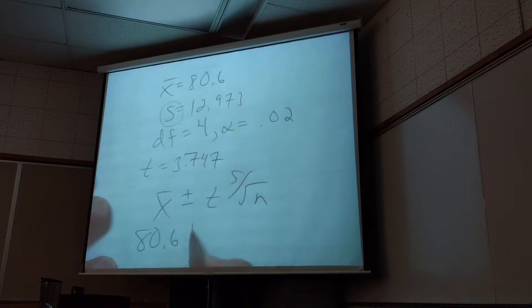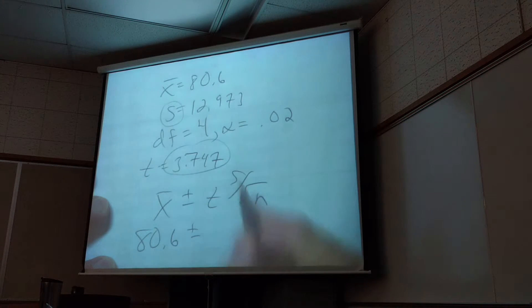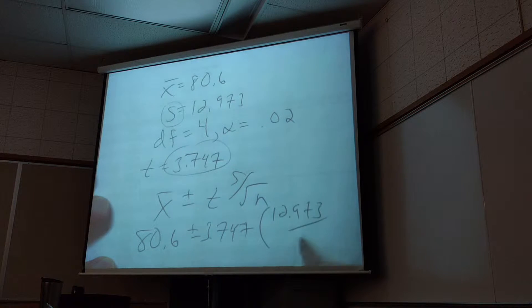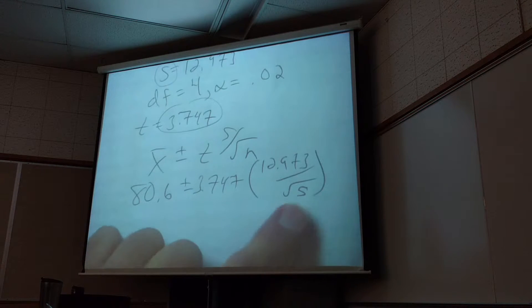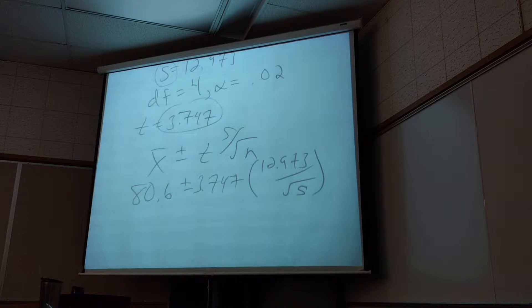So I'm going to start at 80.6. I'm going to go up and down this many steps: 12.973 over square root of 5. One big mistake I see is people put 4 there because their brain gets stuck on degrees of freedom. The formula requires n, not n minus 1.